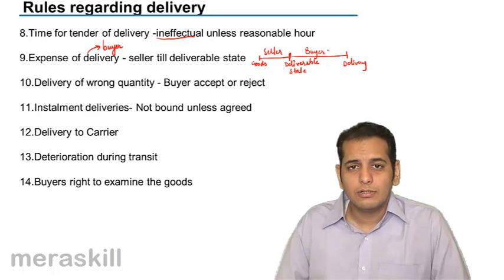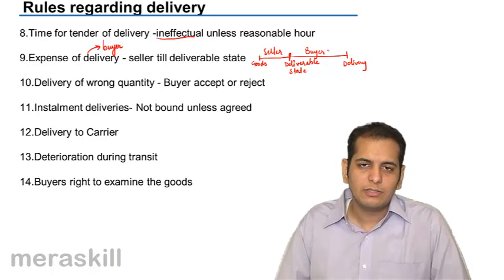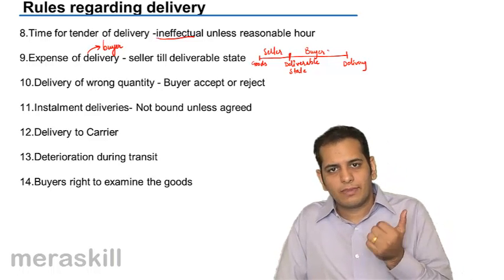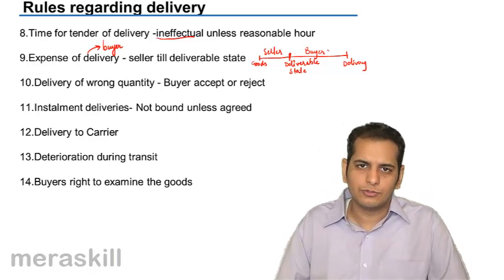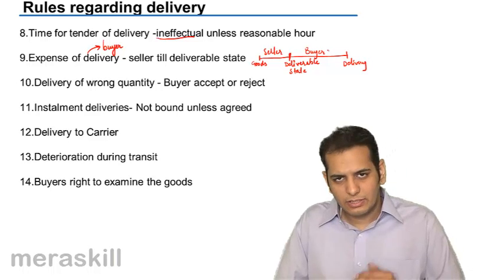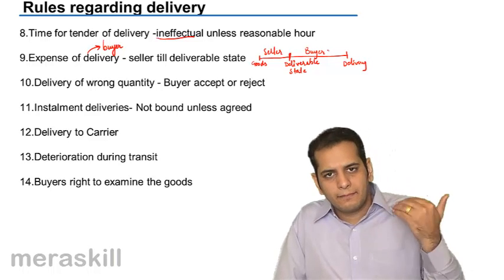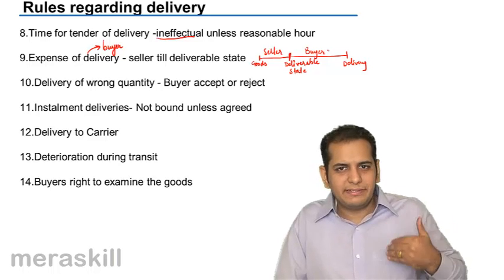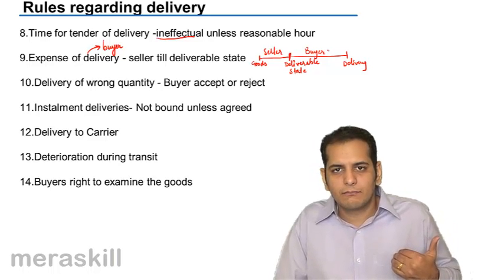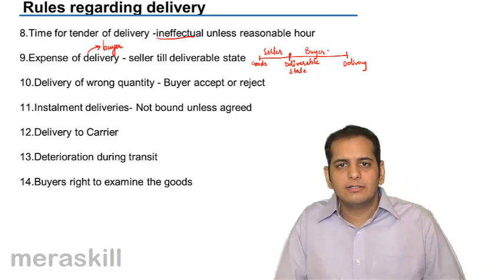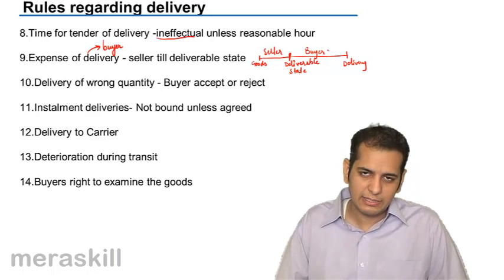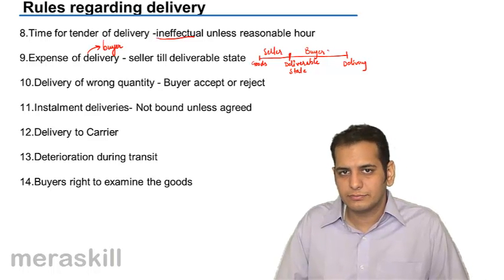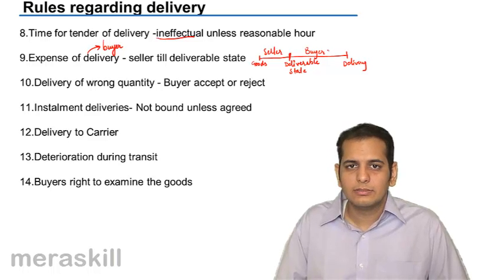If a smaller quantity is delivered, you have two options. First, accept the whole of the goods — meaning you accept the 70 bags even though you contracted for 100. Second, reject the whole of the goods — saying you contracted for 100 bags, so you will not accept 70.